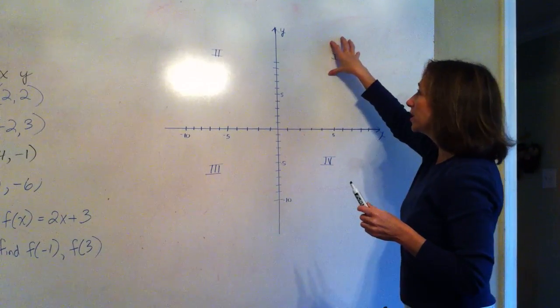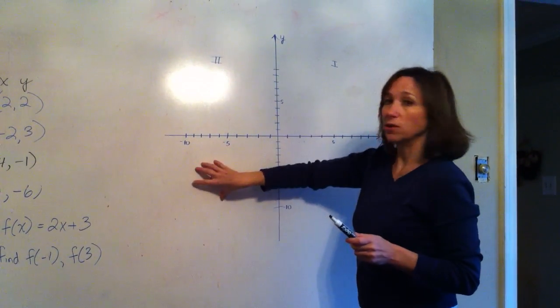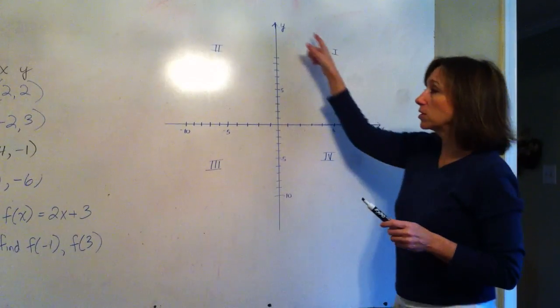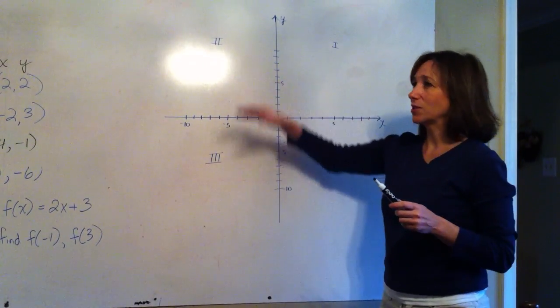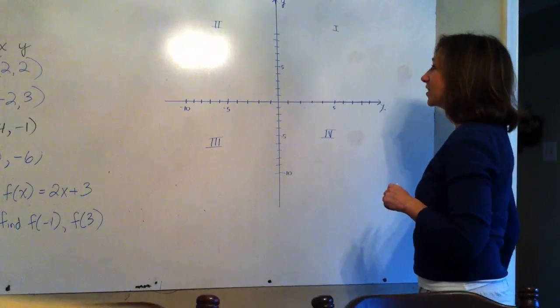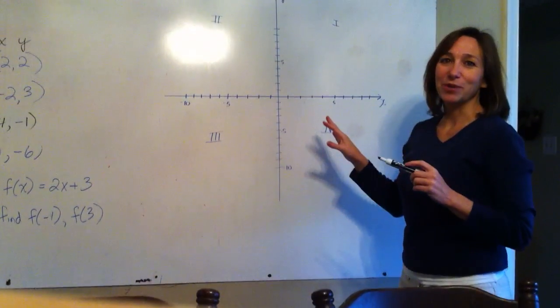There's four quadrants in a Cartesian coordinate system. We have quadrant 1 starts here, quadrant 2, quadrant 3, and quadrant 4. It goes counterclockwise and we use Roman numerals. So we're going to start plotting the points.